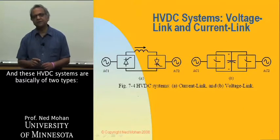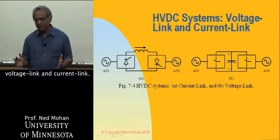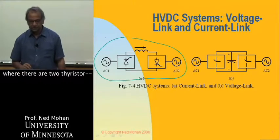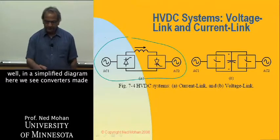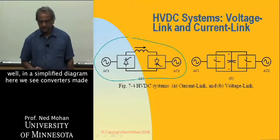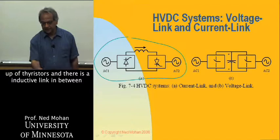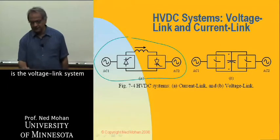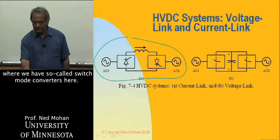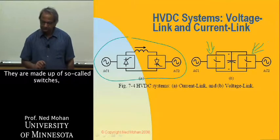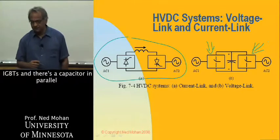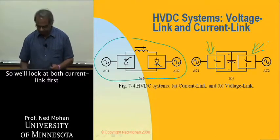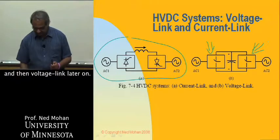These HVDC systems are basically of two types: voltage link and current link. The current link system, shown on the left, uses converters made up of thyristors with an inductive link in between, which is part of its transmission line. The voltage link system uses so-called switch-mode converters made up of IGBTs, with a capacitor in parallel between the two converters. We will look at current link first, and then voltage link later on.